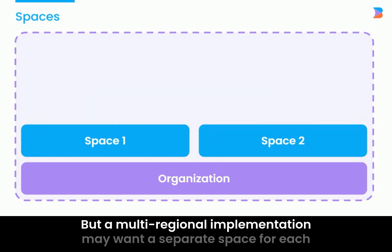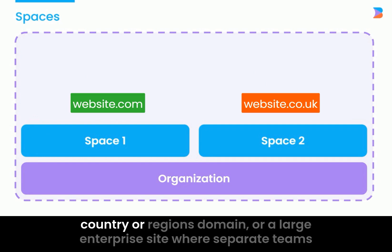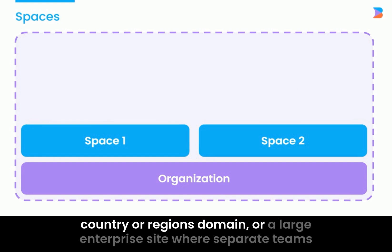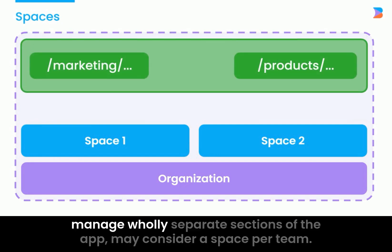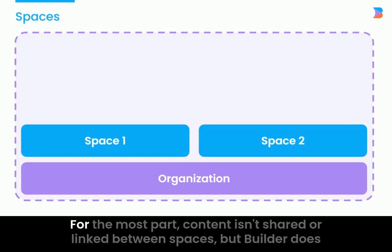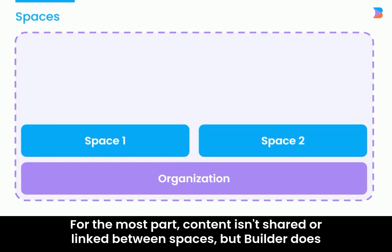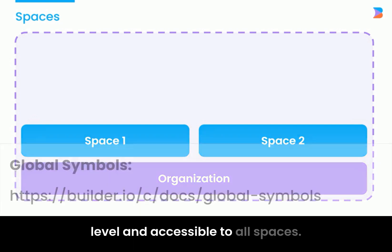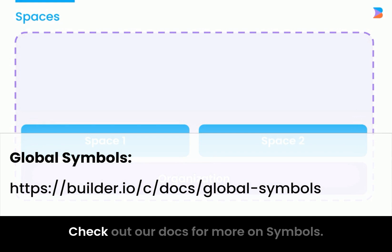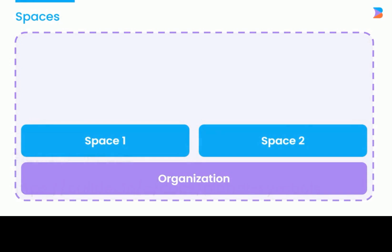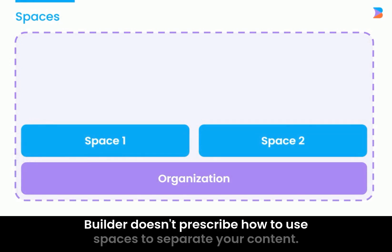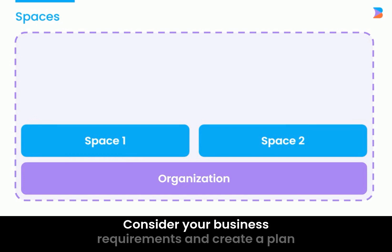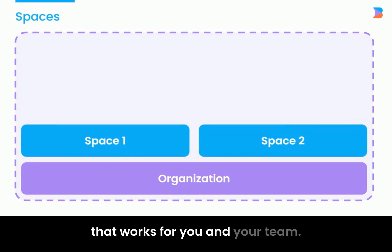A multi-regional implementation may want a separate space for each country or region's domain, or a large enterprise site where separate teams manage wholly separate sections of the app may consider a space per team. For the most part, content isn't shared or linked between spaces, but Builder does provide a concept of global symbols, which are set at the organization level and accessible to all spaces. Check out our docs for more on symbols. Builder doesn't prescribe how to use spaces to separate your content — consider your business requirements and create a plan that works for you and your team.